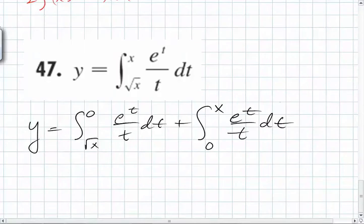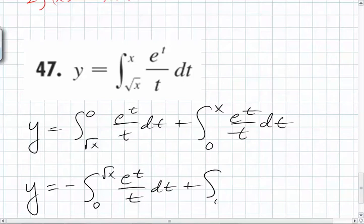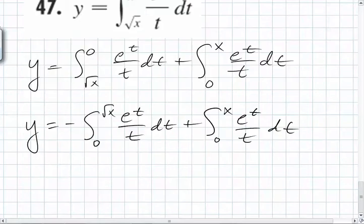Okay. With FTC part 1 on this side, because you have the constant below, so what do you do to the first one, Carter? You flip it. So it's going to be y equals negative integral from 0 to root x of e to the t over t dt plus the integral from 0 to x of e to the t over t dt. Now, can you apply the FTC part 1? Yeah. Yes, now you can.